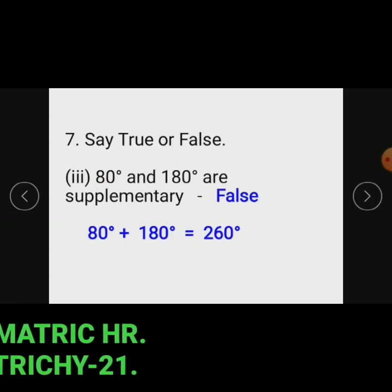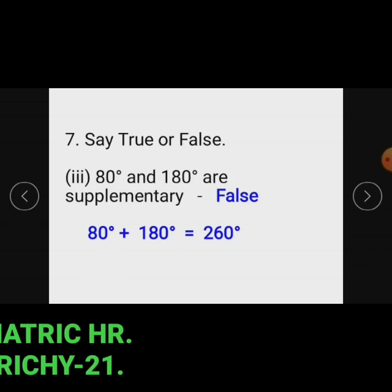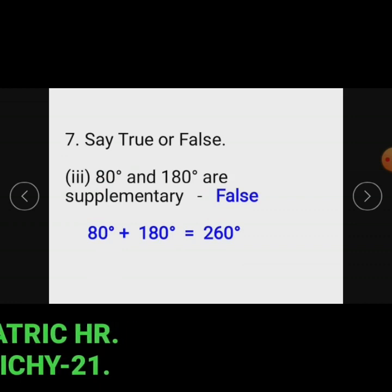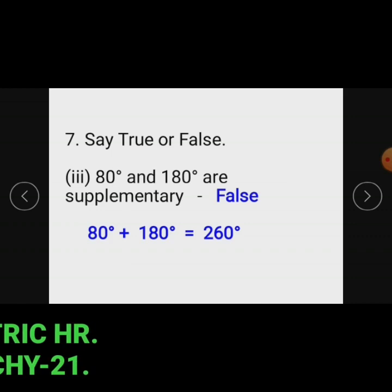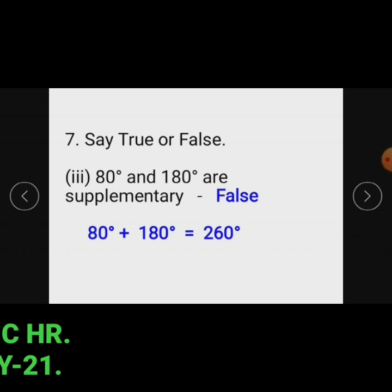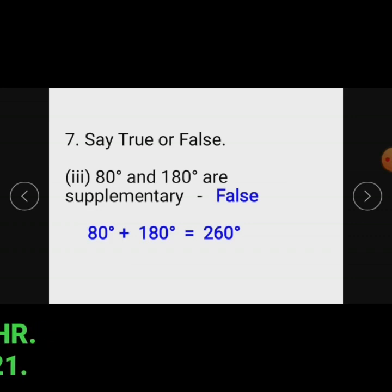Subdivision 3: 80 degrees and 180 degrees are supplementary. Two angles are supplementary when they add up to 180 degrees. But here 80 degrees and 180 degrees add up to 260 degrees, which is not equal to 180 degrees. So 80 degrees and 180 degrees are not supplementary angles to each other. The statement is false.